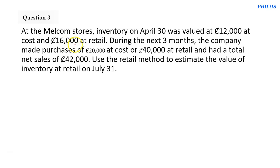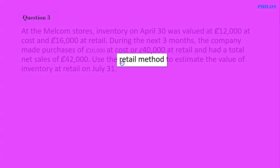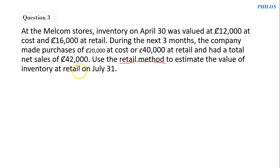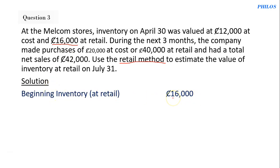During the next three months, the company made purchases of 20,000 at cost or 40,000 at retail, and had total net sales of 42,000. Use the retail method to estimate the value of inventory at retail on July 31st. To solve this, first write the beginning inventory at retail, which is 16,000.